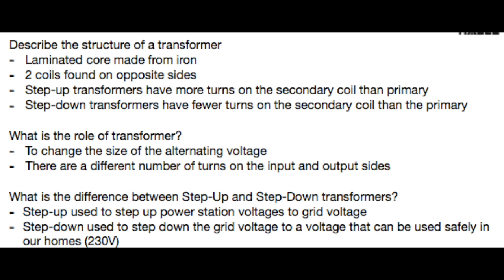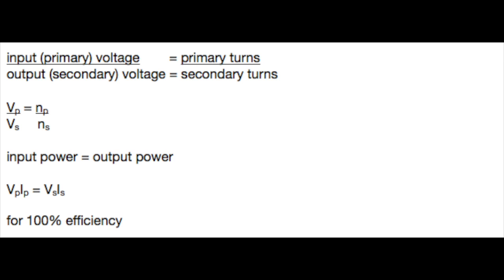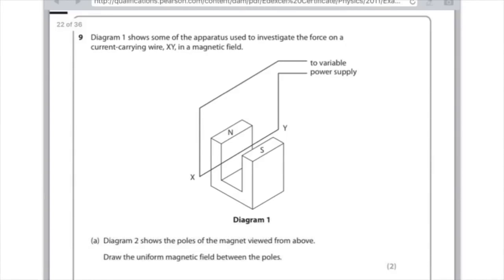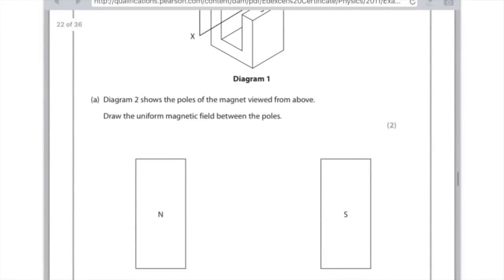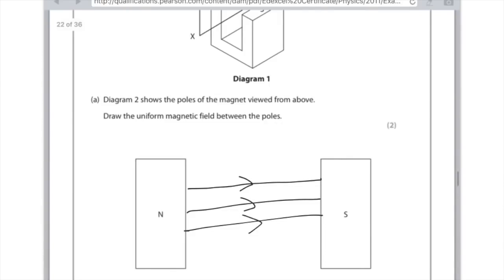Now it's time to look at the maths element of this topic, focusing on transformers. For the uniform magnetic field between two poles, draw straight lines using a ruler — a minimum of three — and add arrows showing the field runs from north to south.